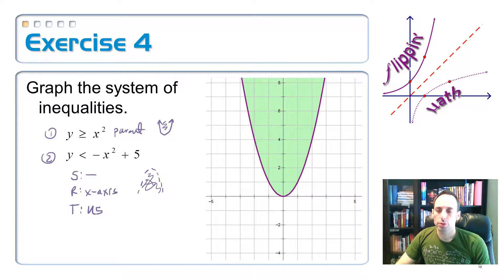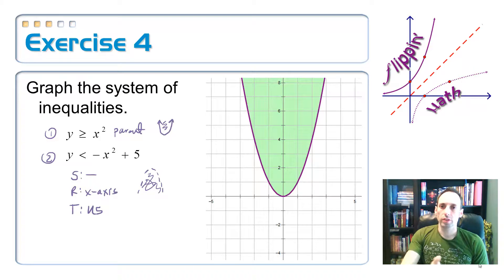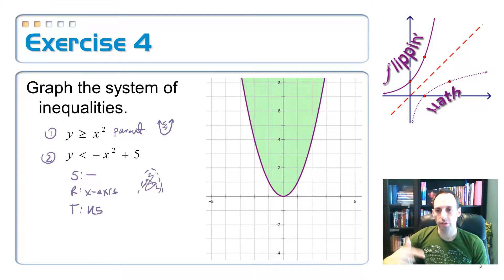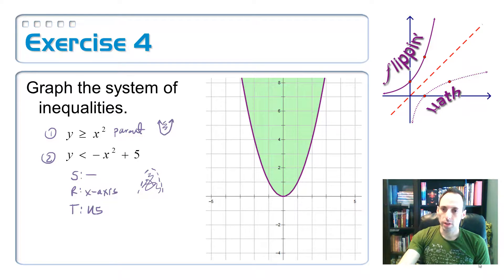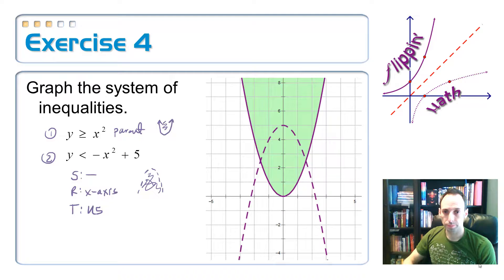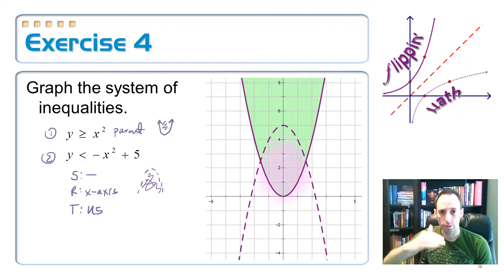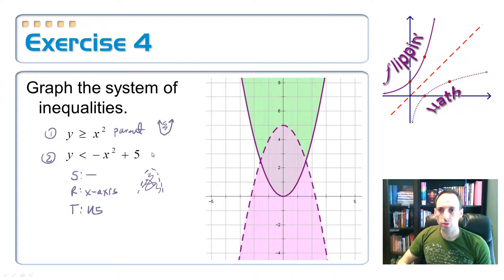Now, parabola number two. I just did SRT transformations for it. So it's not being scaled. It is reflecting across the X axis. And then it is translated up five. Upside down, so it's mustache. It's dashed because it's not equal to. And since it's less than, it's shaded down below. So here's the parabola. And I'm going to shade down below. And it's the slightly darker purple part that's the answer. Anything within this region would satisfy both of those inequalities.